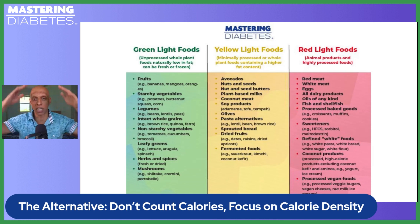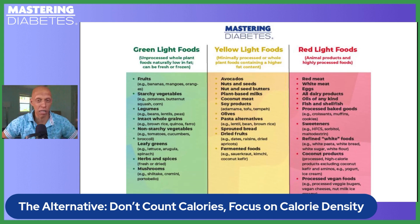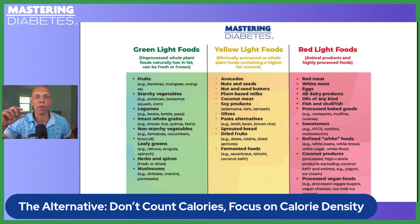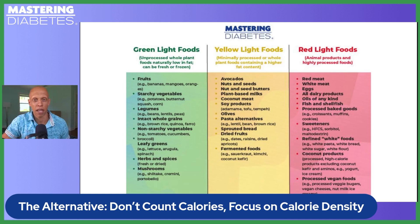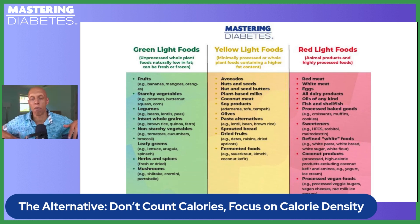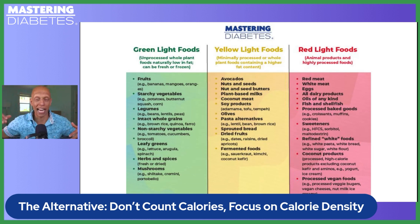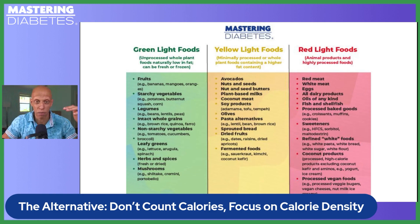Yellow light foods are slightly more processed — things that have to go through a manufacturing process to become edible, with a slightly higher fat content, and therefore can be somewhat problematic, but they're okay to incorporate into your diet in a small amount. And then the foods in the red light category tend to be mainly of animal origin, high in saturated fat, and/or processed or ultra-processed. It's just that simple.